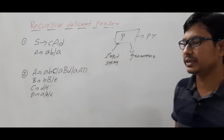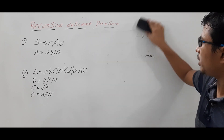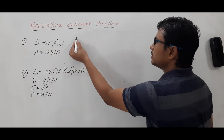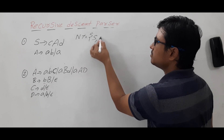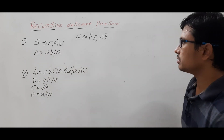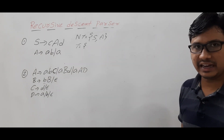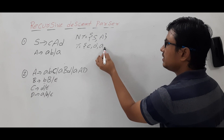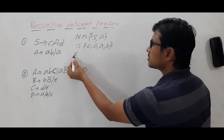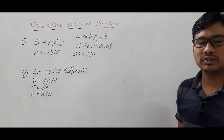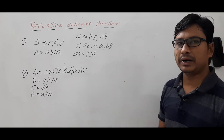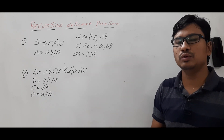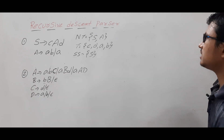Now coming to Example 1. We need to identify the non-terminals — the symbols on the left-hand side — so S and A are the non-terminals. The terminals are the symbols on the right-hand side other than non-terminals: small c, small d, a, and b. The start symbol is S. When constructing the parse tree, you start from the start symbol, which acts as the root node of the parse tree.